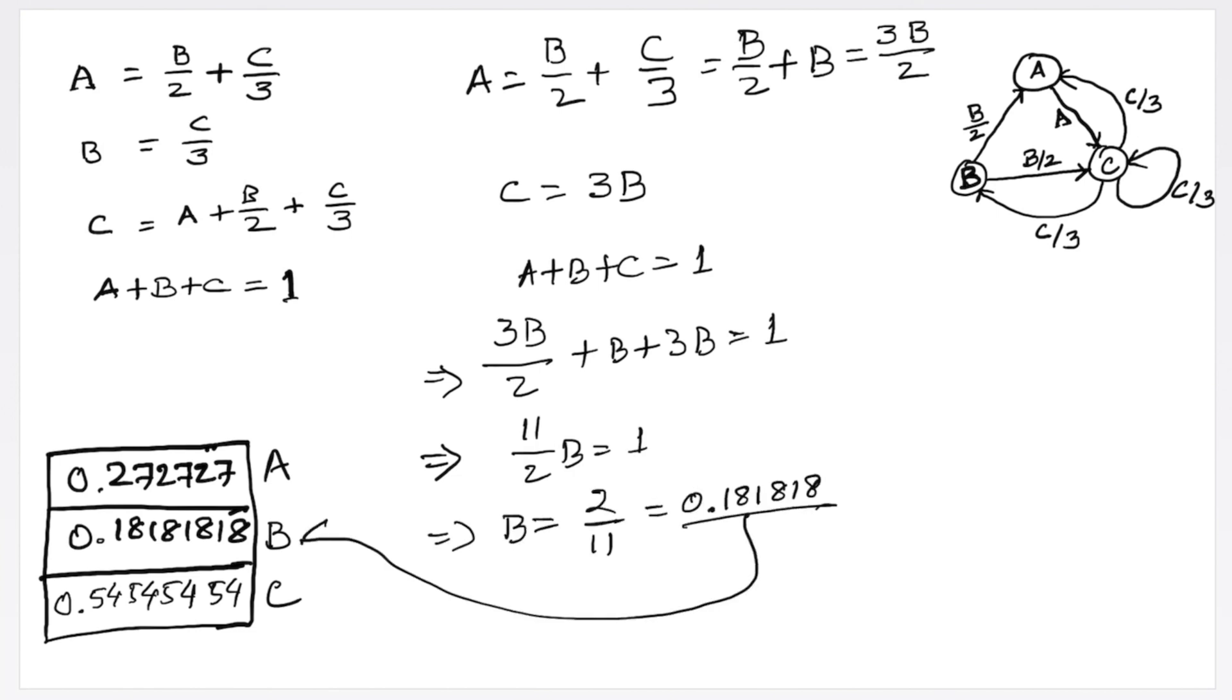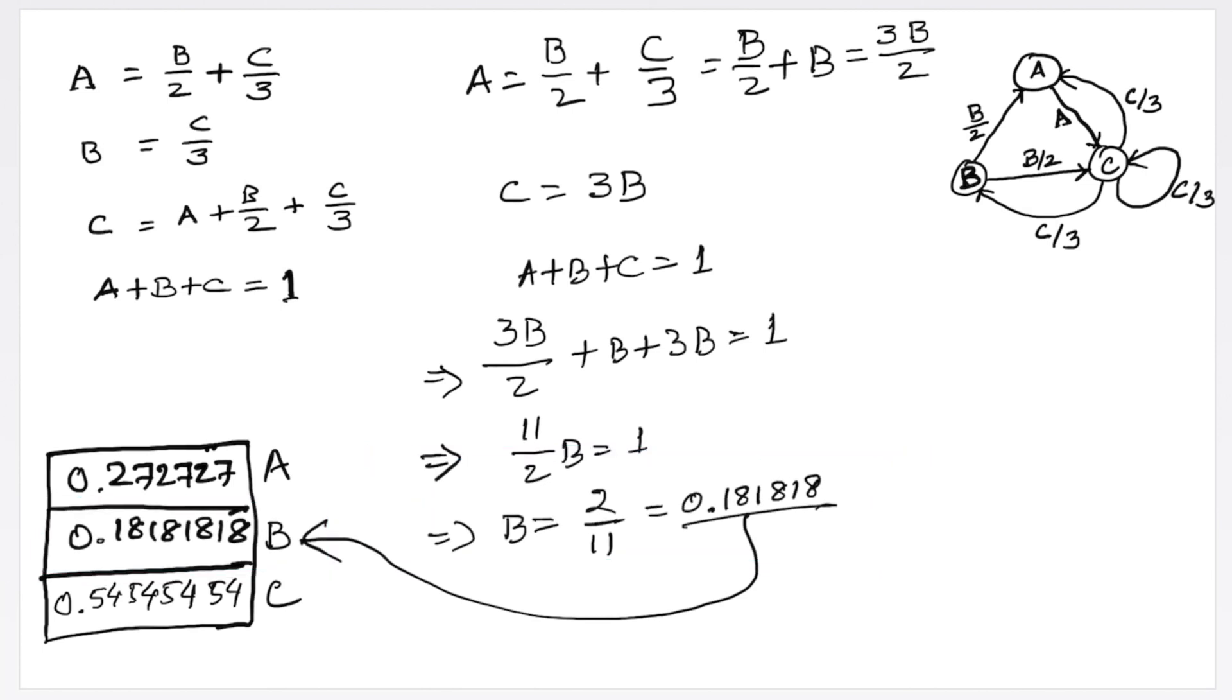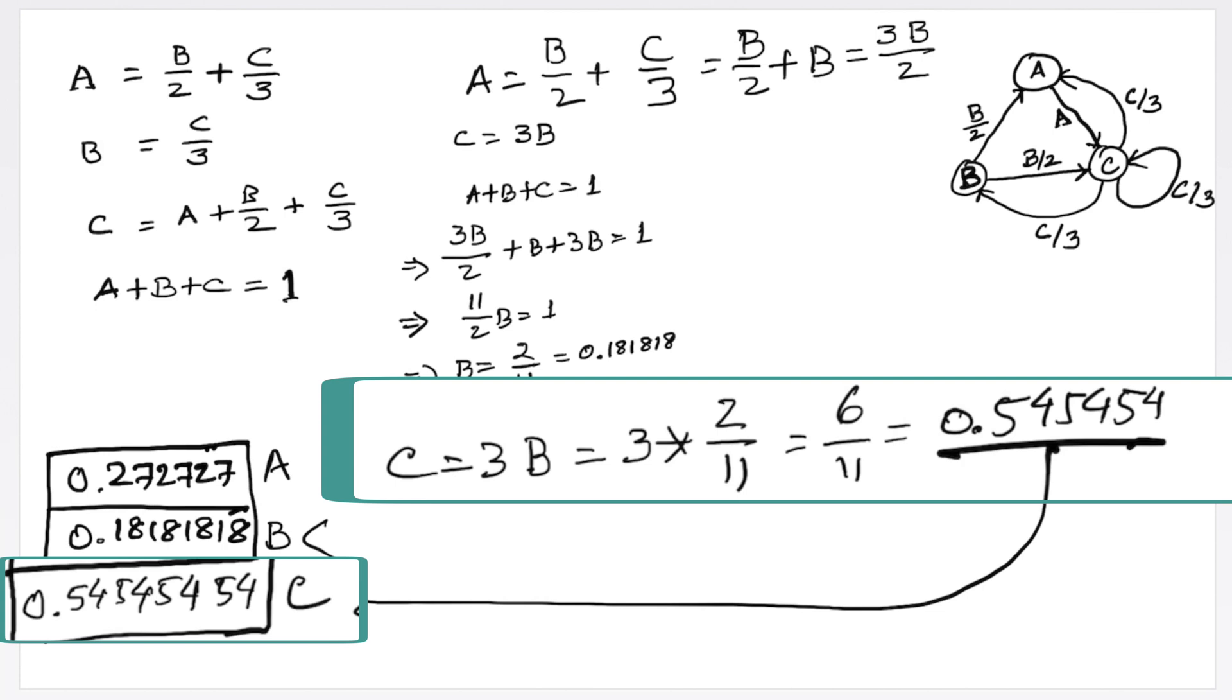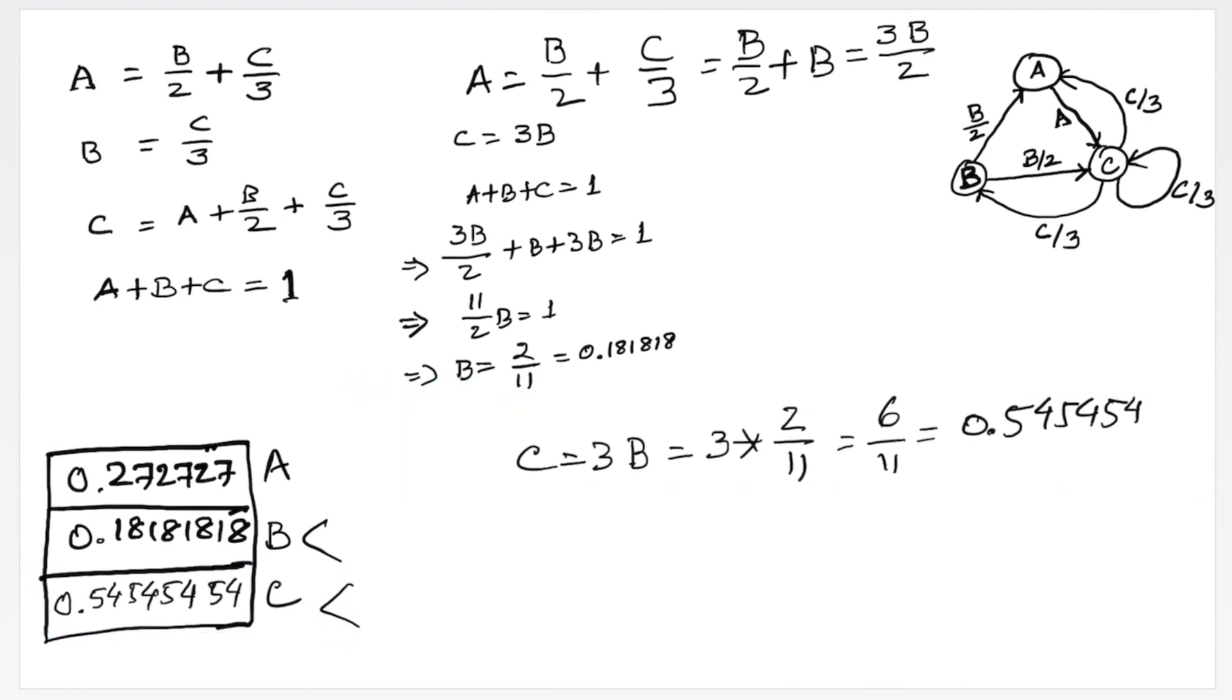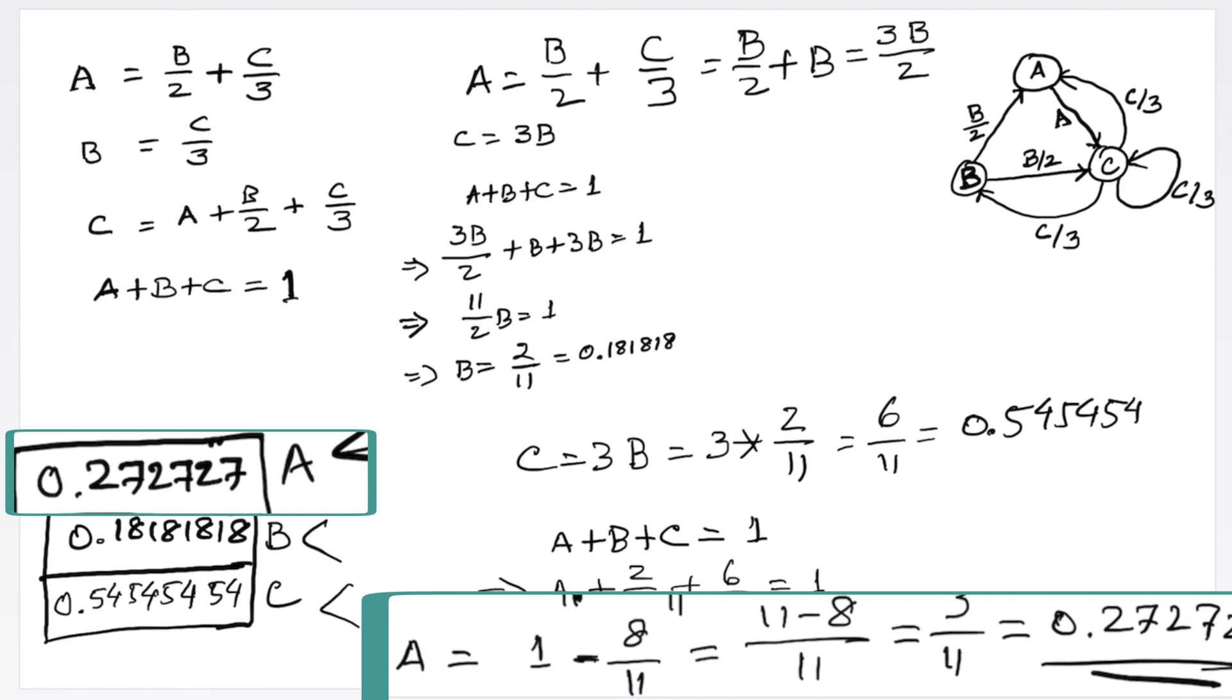Notice that the value of B is already equal to what we received from the page rank algorithm using matrix operations. The value for C is matching exactly the value of C that we received from the page rank algorithm using matrix operations. Now finally, since we have the values for B and C, we can use the equation A plus B plus C equal to one and replace the values of B and C to find the value for A. 0.27272727, which is exactly equal to what we have for A using matrix operations.